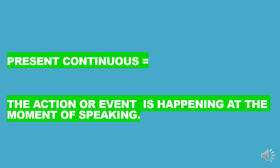Unit 10, the Present Continuous tense. The Present Continuous tense is used to show that an action or event is happening at the moment of speaking. For example, you are drinking Coca-Cola, so you are holding a glass of Coca-Cola, and you must perform the action or drink at the moment of speaking.